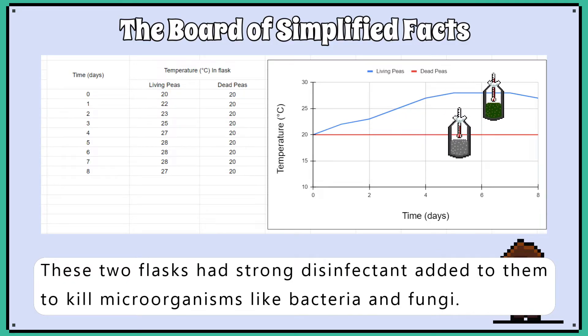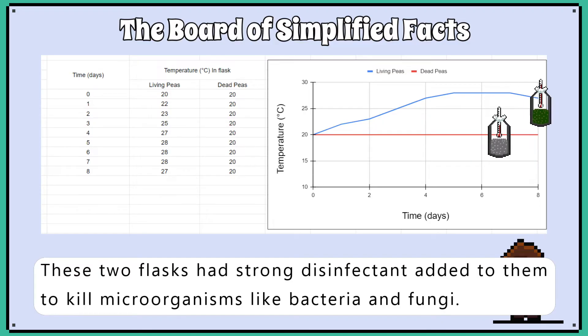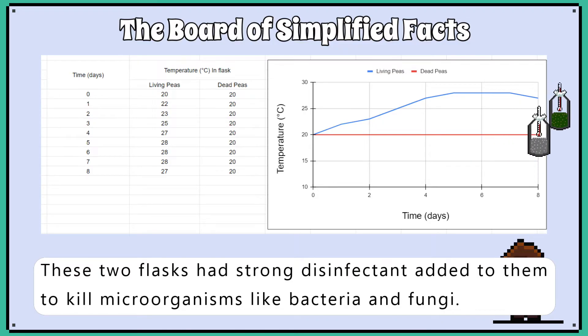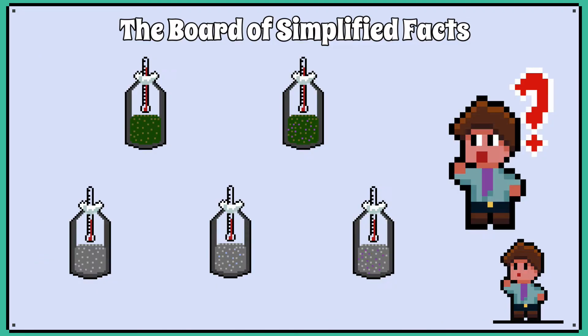This experiment's results show a temperature rise over time as the peas aerobically respire. Eventually the temperature rise stops because they run out of glucose. The boiled peas should not cause a temperature change.